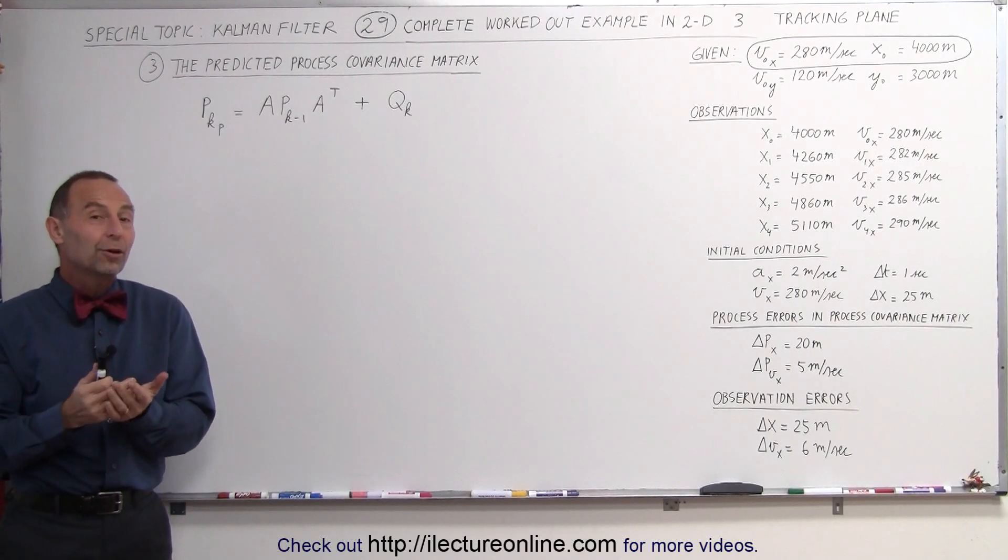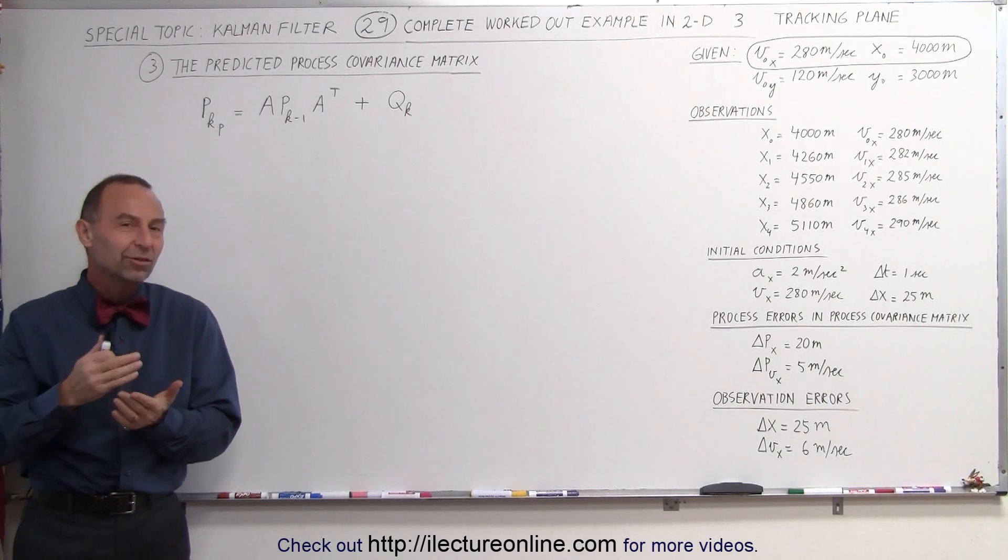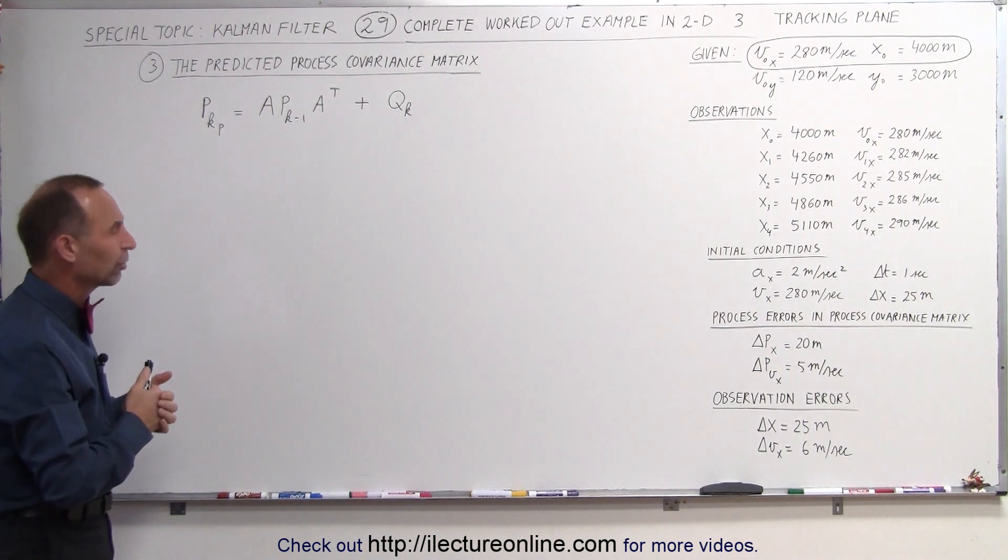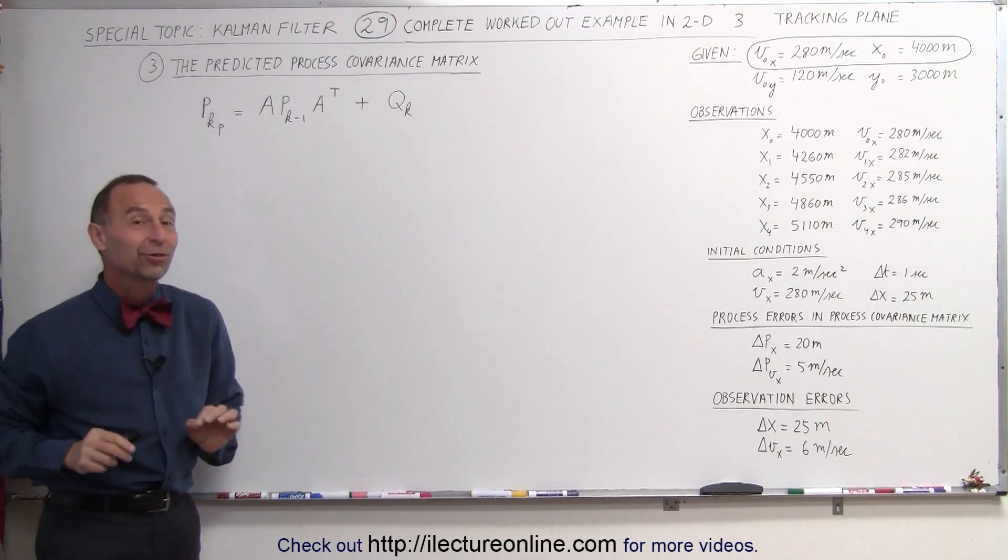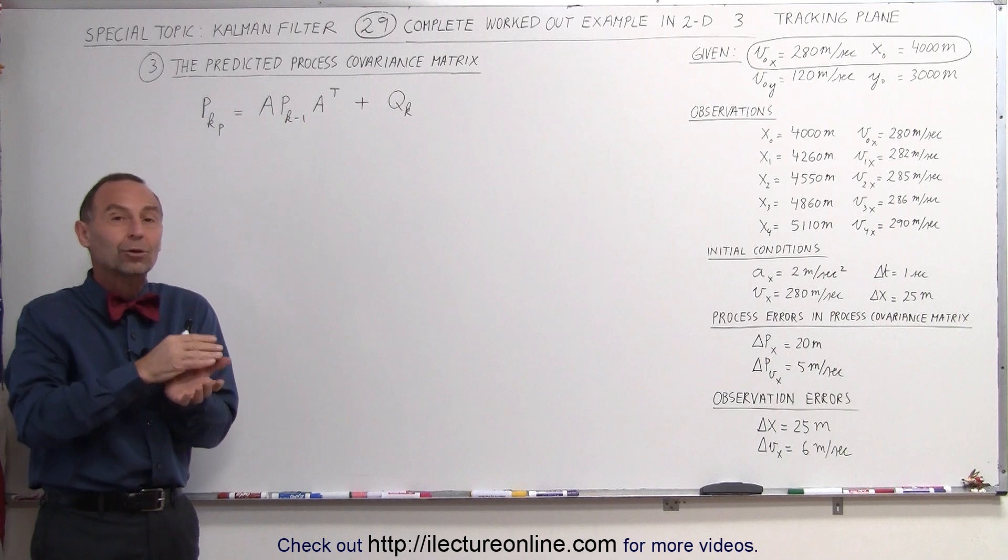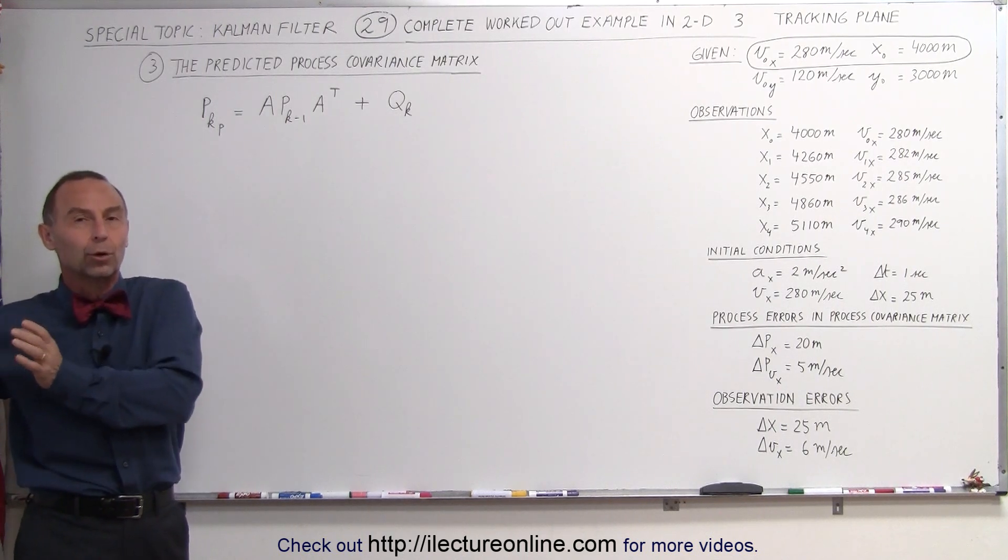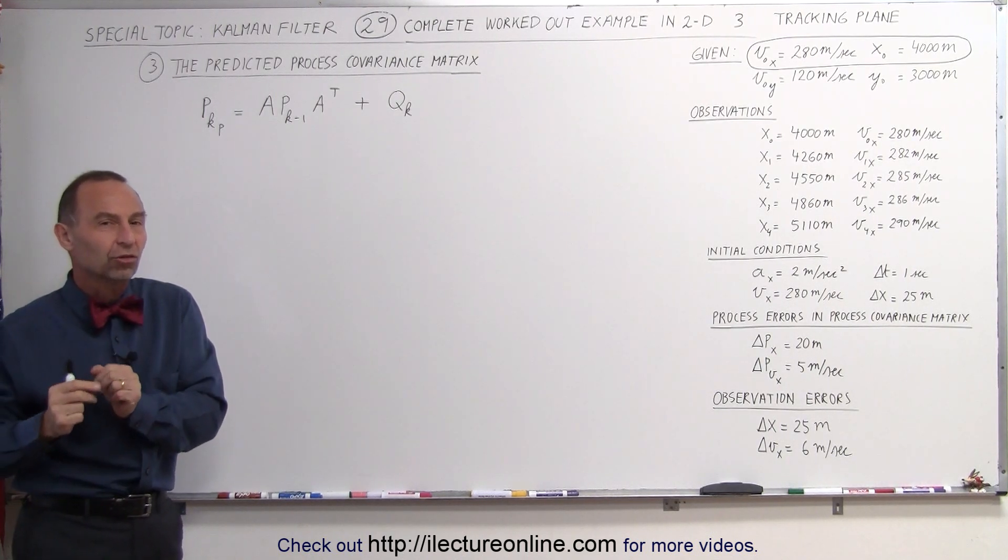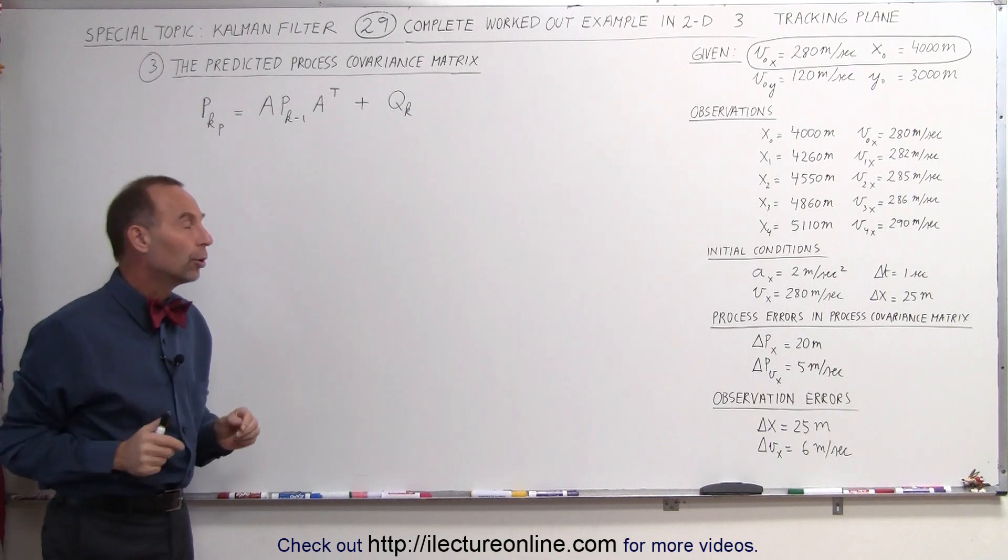Welcome to ElectronLine. In this video, we're going to show you how to find the process covariance matrix, or I should say, the predicted process covariance matrix, because we already have the covariance matrix from the previous cycle, or in this case, from the initial conditions. Now we're going to predict it forward.